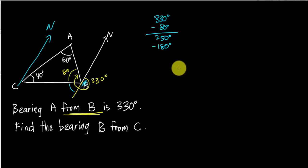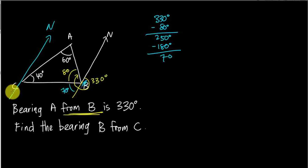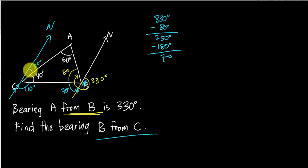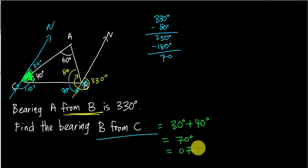Since the two north lines are parallel, I know the co-interior angle is 110 degrees. Adding 110 plus 40 gives 150, so the remaining angle is 30 degrees. The bearing of B from C is the total angle from north of C rotating clockwise to line CB, which is 30 plus 40 equals 70 degrees. The answer is written as 070 — always three digits.